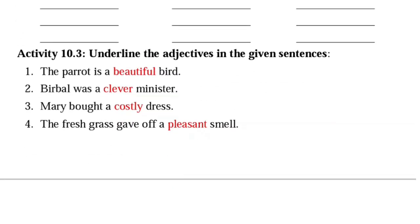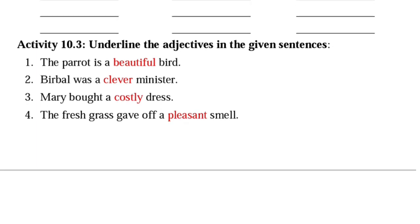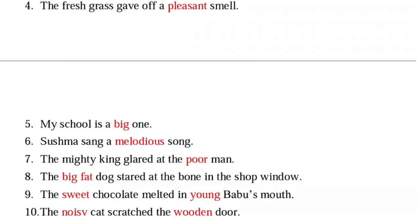Next: underline the adjectives in the given sentences. 'The parrot is a beautiful bird' — here 'beautiful' is the adjective. 'Birbal was a clever minister' — 'clever' is the adjective. 'Mary bought a costly dress' — 'costly' is an adjective because it is saying something about the dress. 'The fresh grass gave up a pleasant smell' — 'pleasant' describes the smell.